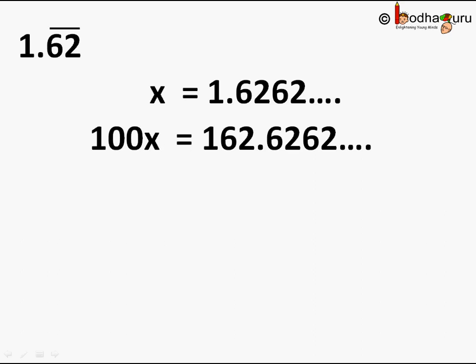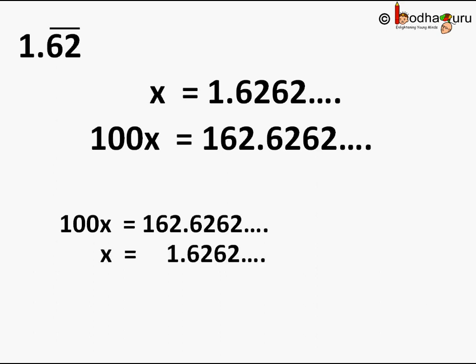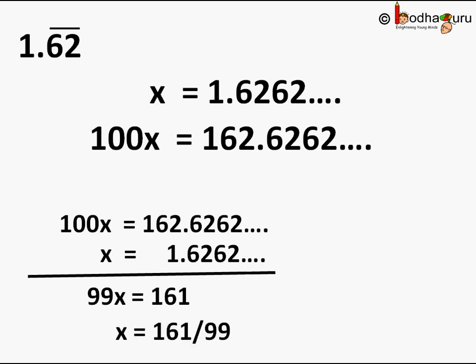So 100x equals 162.6262 and so on, and x equals 1.6262 and so on. If we subtract the two, we get 100x minus x is equal to 99x, and on the right side we get 161 as the decimal part would cancel out. 162 minus 1 equals 161. So x will be equal to 161 by 99, which is a rational number.